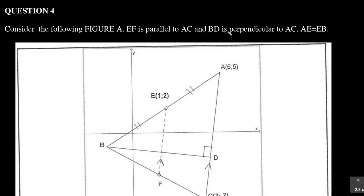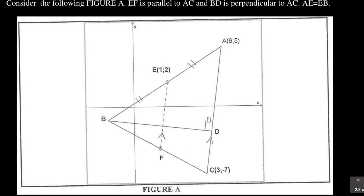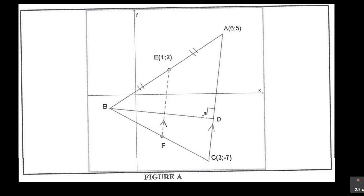It says BD is perpendicular to AC — at point D, there is a 90-degree sign showing that lines BD and AC meet at 90 degrees. It also says AE is equal to EB, shown by tick marks on those segments, meaning E is the midpoint of AB. The full diagram shows the coordinates: A is (6, 5), E is (1, 2), and C is (3, 7).